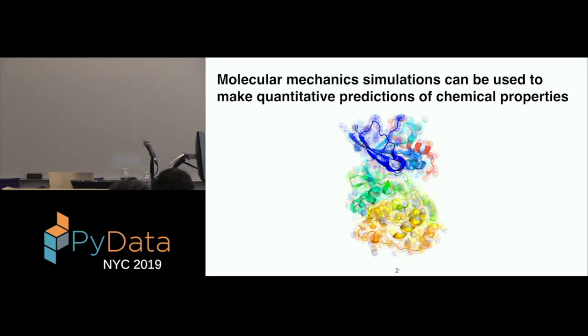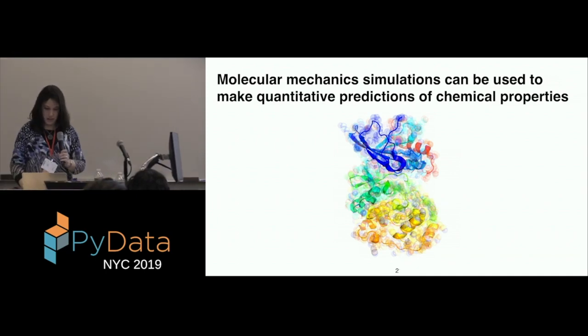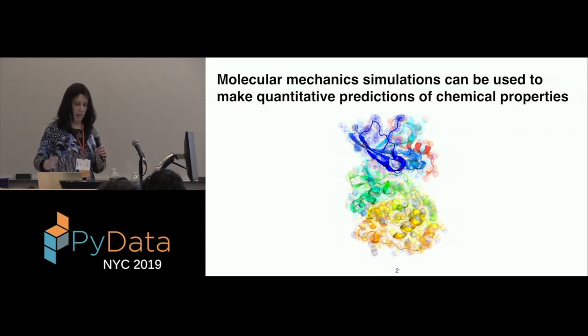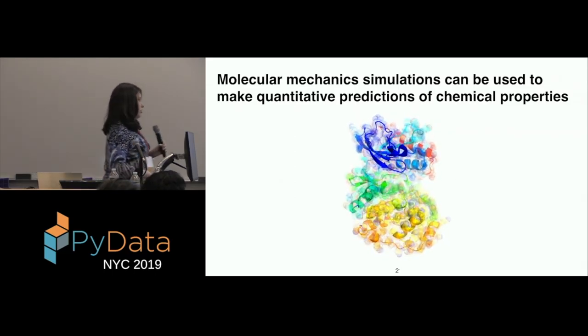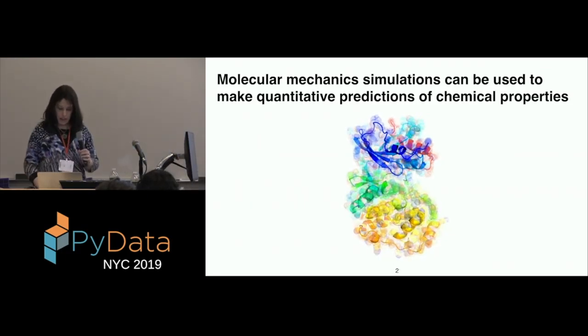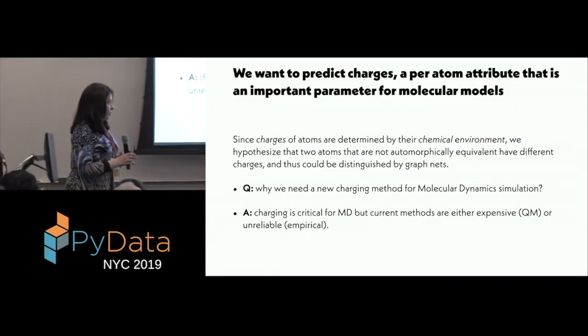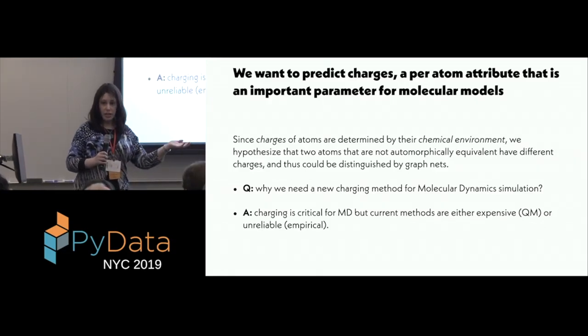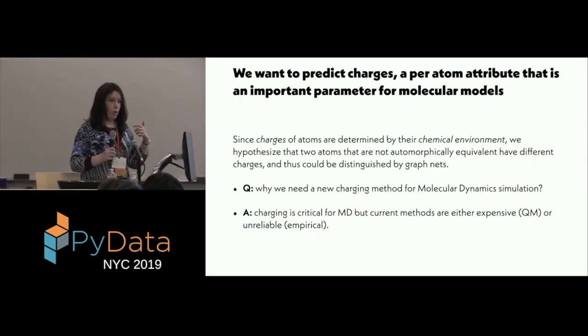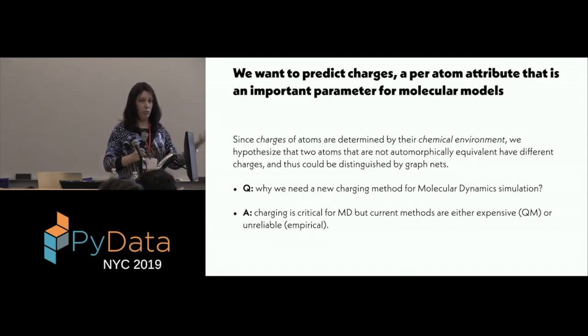All right, so I'm going to talk about two applications. Specifically, we're going to be talking about per node and per edge attributes, and why it's important. So first, for the application, in our group, we run a lot of molecular simulations, we use molecular models to make chemical predictions, and in these simulations, you can simulate proteins and molecules and all sorts of fun stuff. Now, in order to set up these simulations, we need many parameters, and one of the parameters we need is the charge, the partial charge of each atom. Now, why do we need a new way to predict it? There are existing methods to predict charges for the atoms. However, they're either too expensive, like using quantum mechanics, or if they are not expensive and empirical, they're many times not very reliable. So we need a better way to predict it.